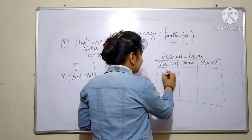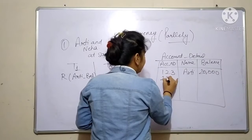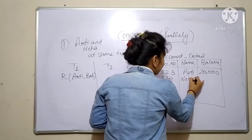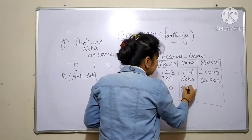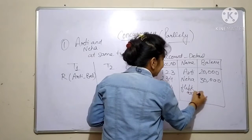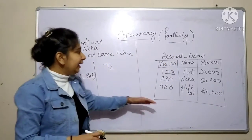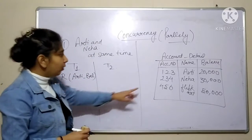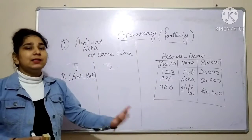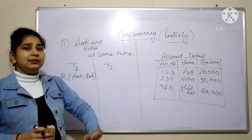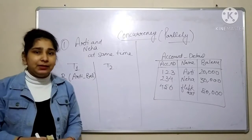We have a database — account details — with account number, name, and balance. Let's say account 1 is Aarti with a balance of 40,000, account 2 is Neha with a balance of 30,000, and account 3 is Flipkart's account with a balance of 50,000. We want to transfer money from Aarti's account to Flipkart and also from Neha's account to Flipkart's account — both happening at the same time.